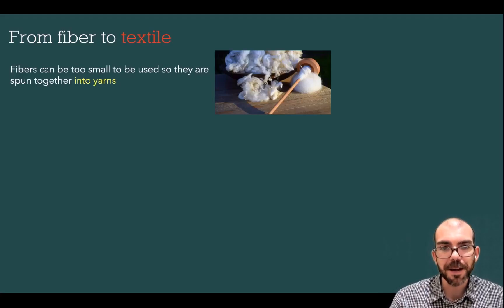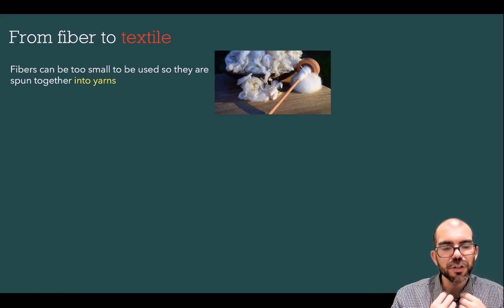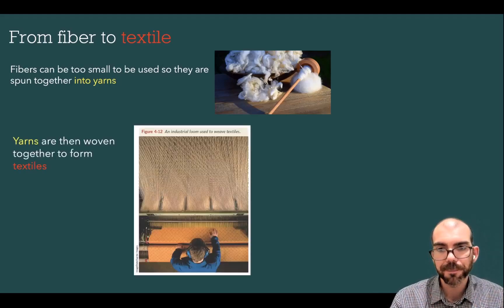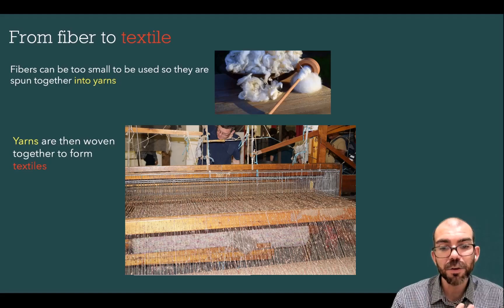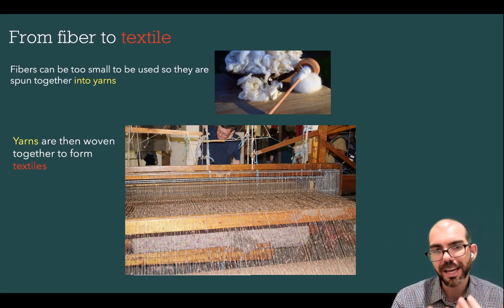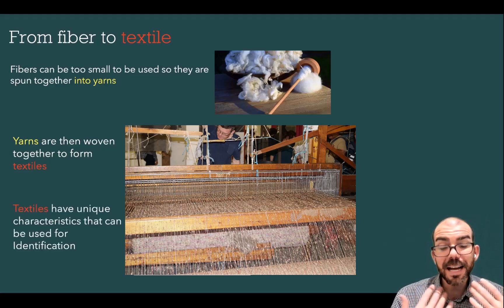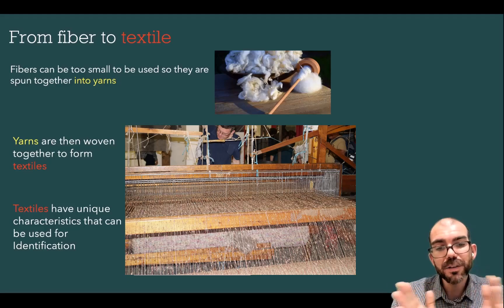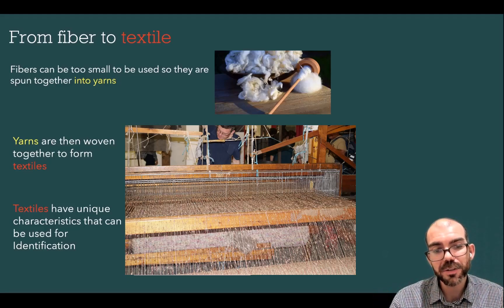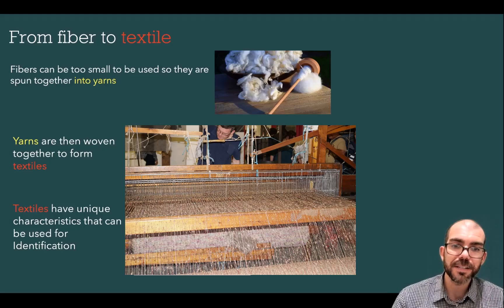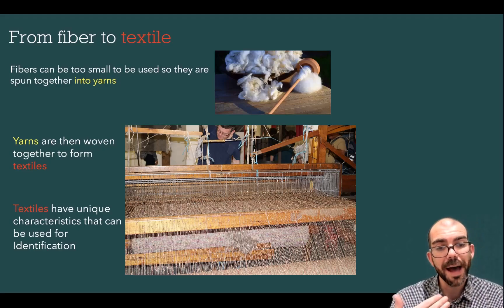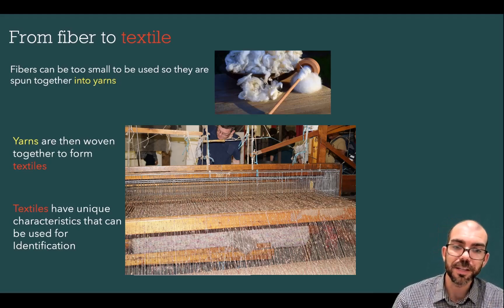To go from a fiber to a textile: fibers are too small on their own to make clothing or other textiles, so they're typically spun together to form something called a yarn. Those yarns can then be woven together to form a textile — the fabrics you're used to working with on clothing and lining furniture like couches and beds. Textiles are unique in that they are spun in different ways and can have different thread counts, providing an avenue for forensic investigators to identify the origin or match a fiber to a piece of clothing found at a crime scene.